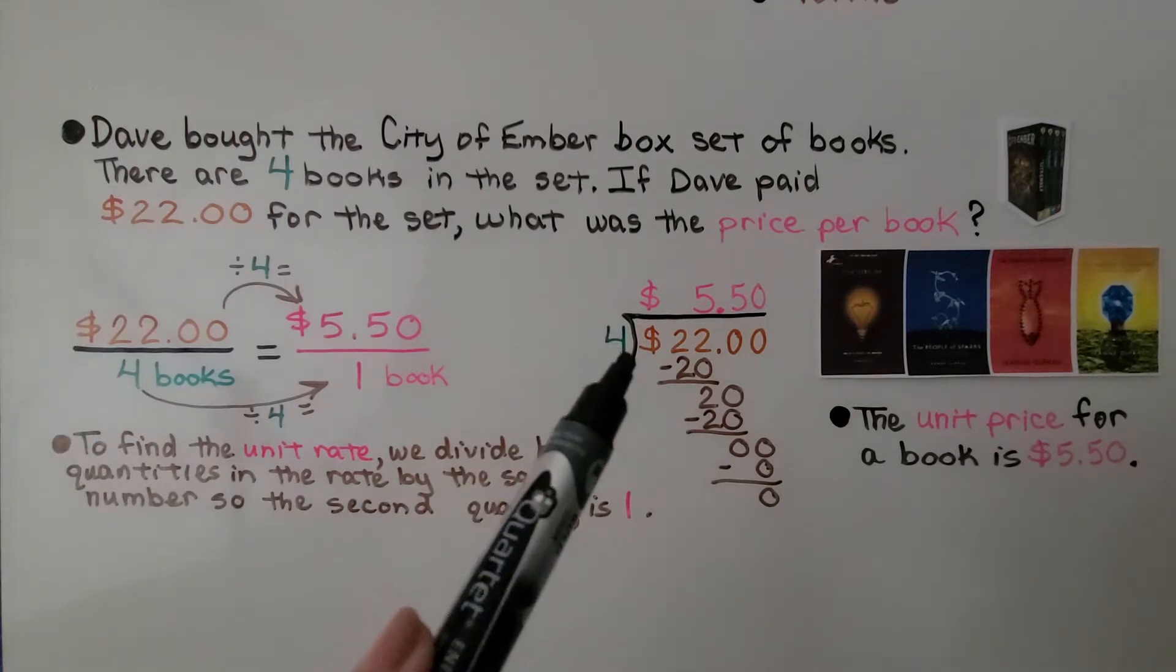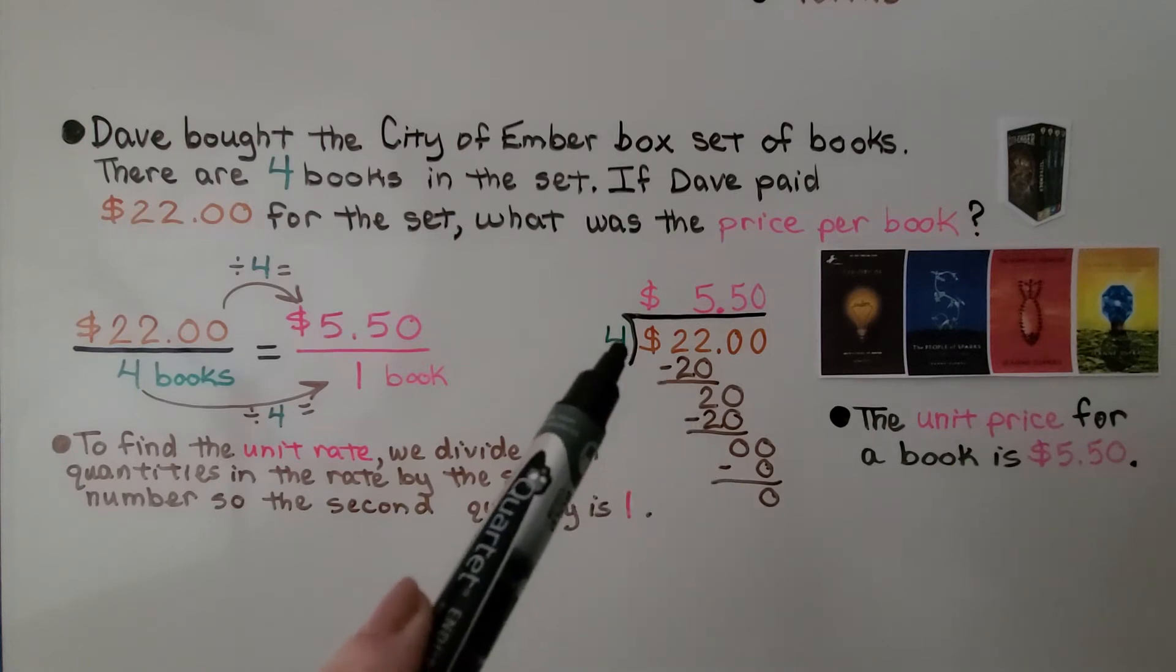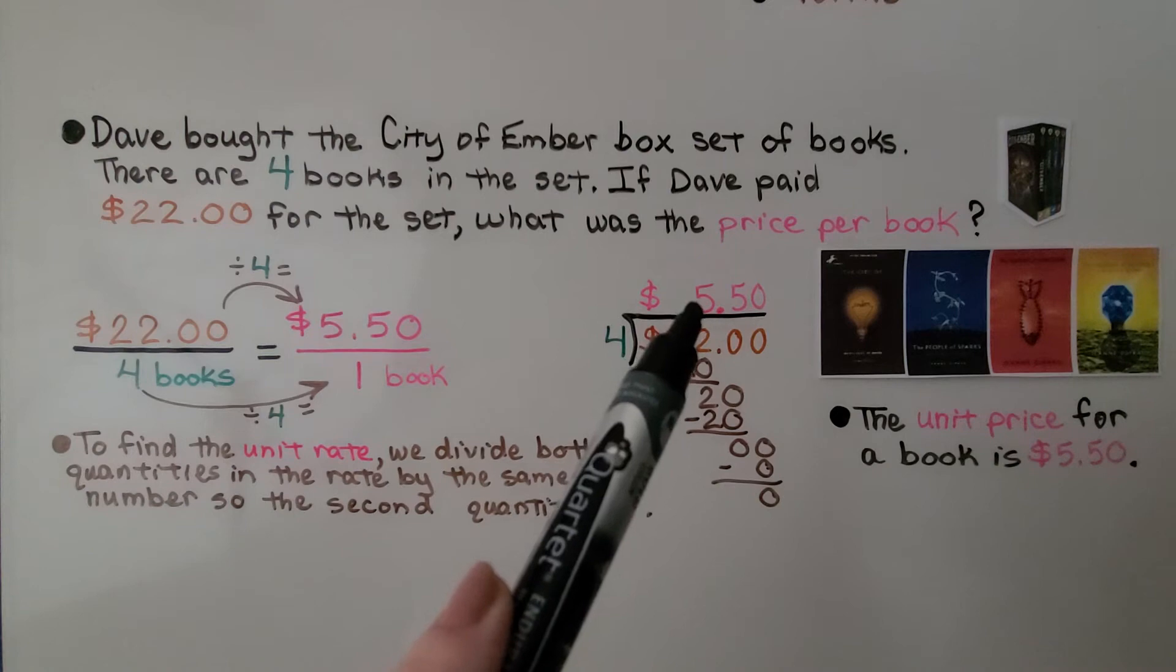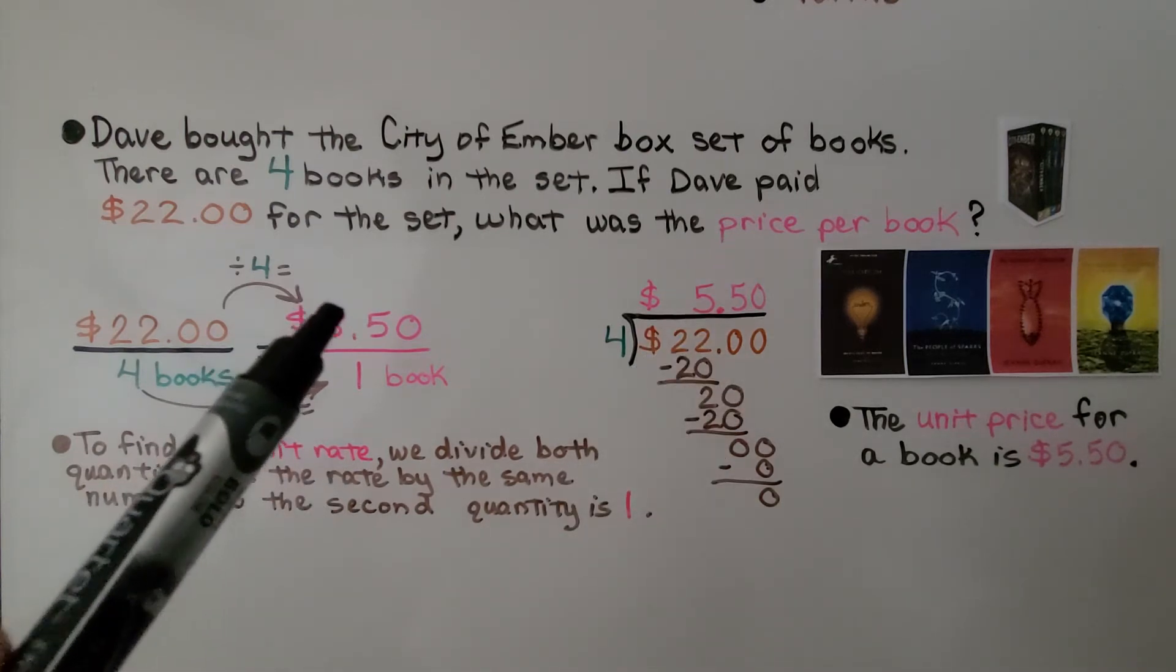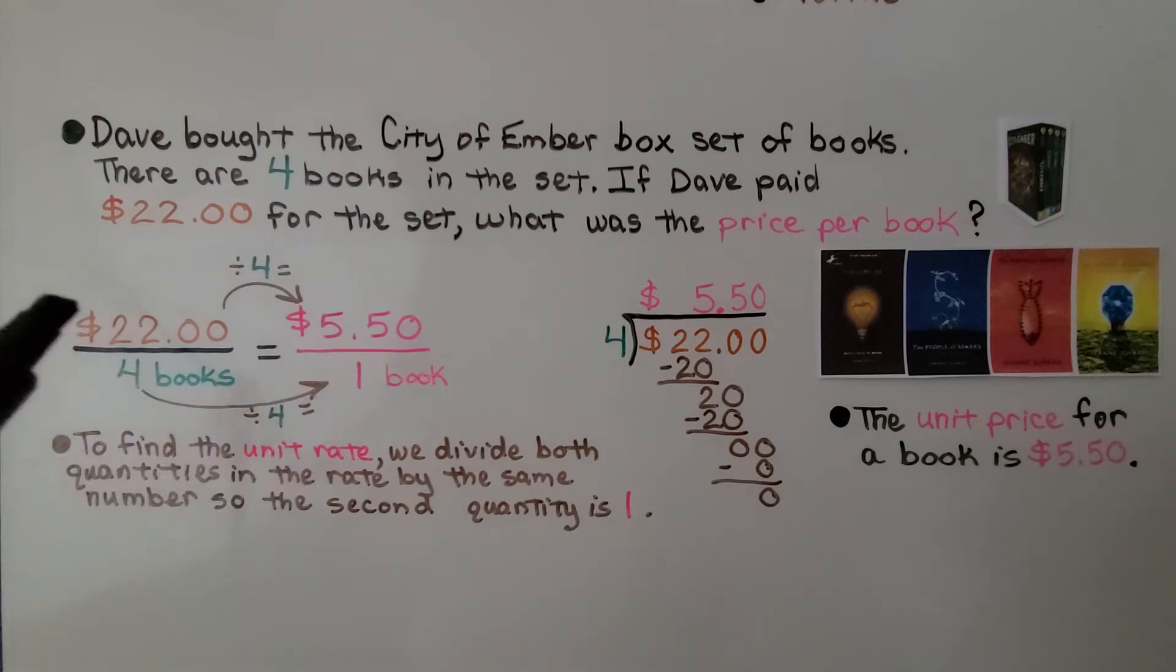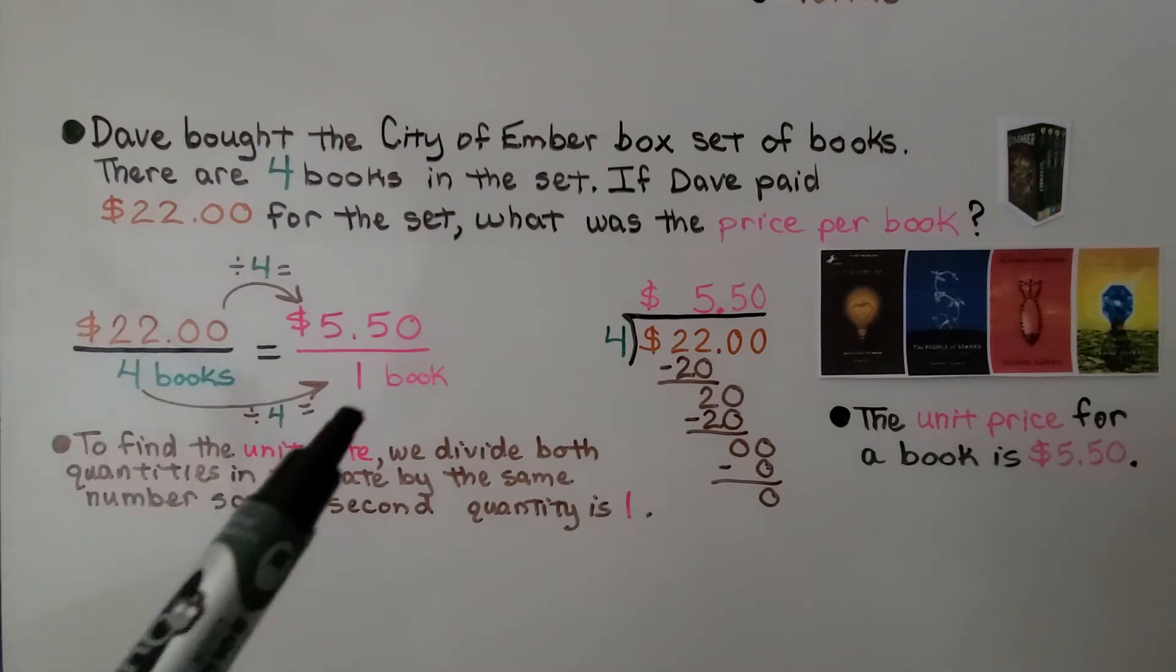We can divide 22 divided by four. We do our math and our division and our subtraction. And we see that it's $5.50. That means it's $5.50 for one book. We divide the $22 by four and we divide the four books by four.